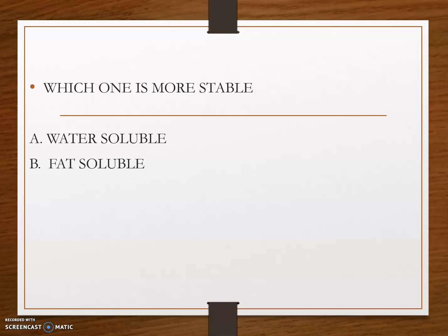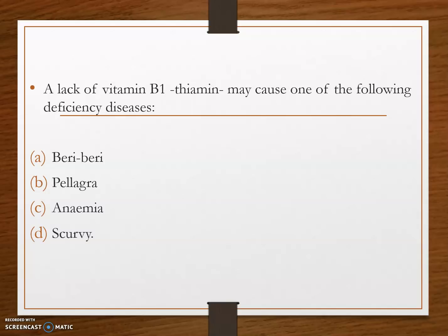Which one is more stable — option A, the water-soluble vitamins, or option B, the fat-soluble vitamins? The answer is fat-soluble vitamins. Water-soluble vitamins can be destroyed by exposure to air, UV rays, light, water, changes in pH, heat, and food preparation techniques. Comparing to water-soluble vitamins, fat-soluble vitamins are more stable.